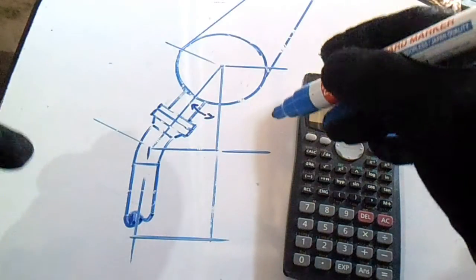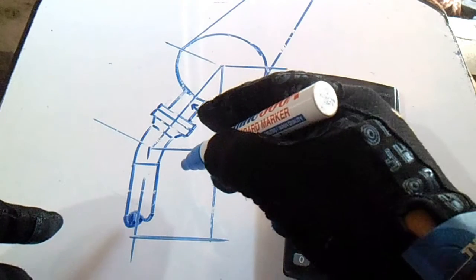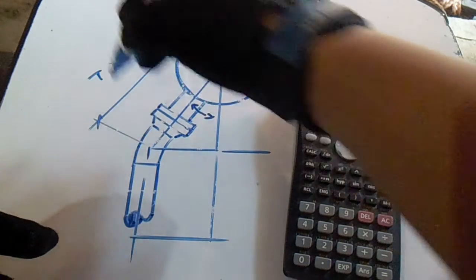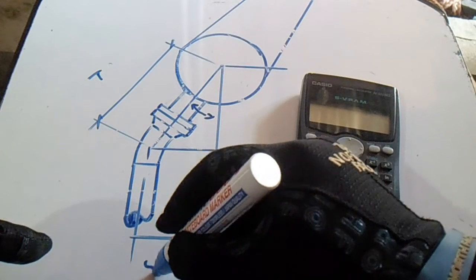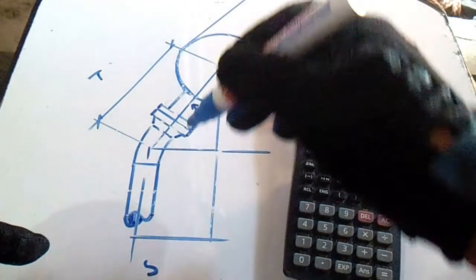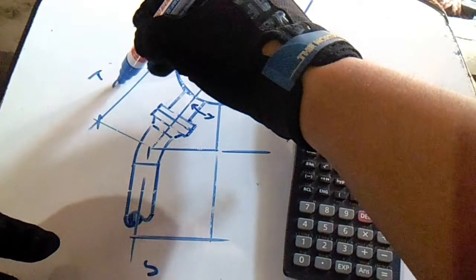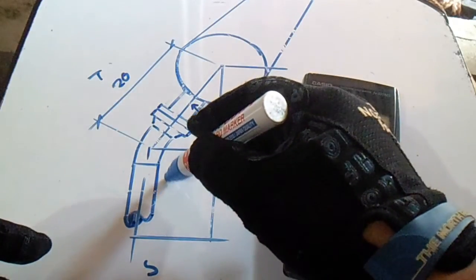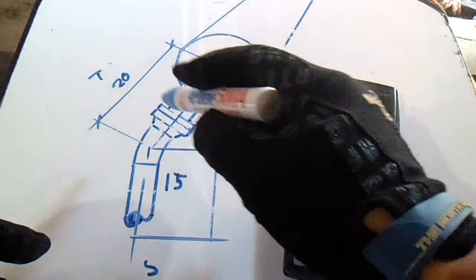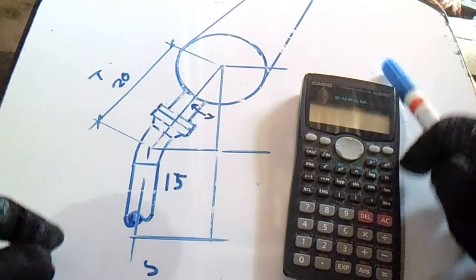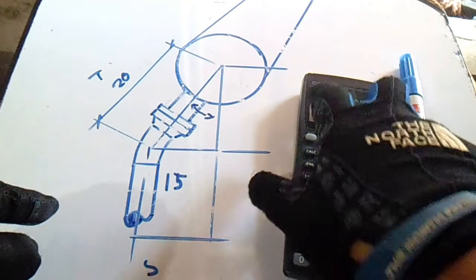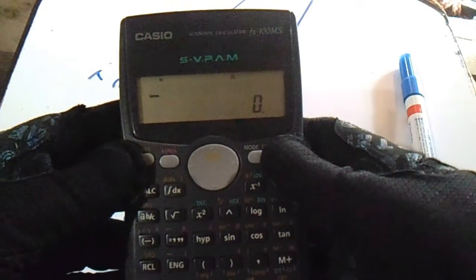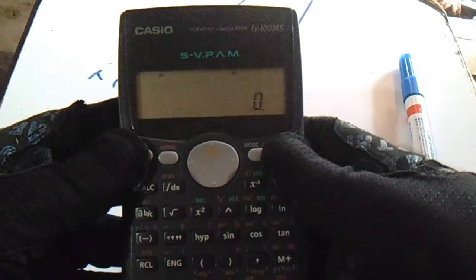We have dimensions given: our travel is 20 and our set is 15. We will compute the angle of this pipe connecting to the vessel using the Casio fx-100ms calculator.